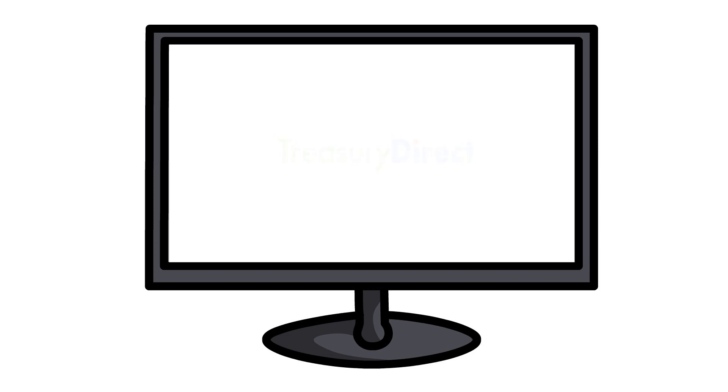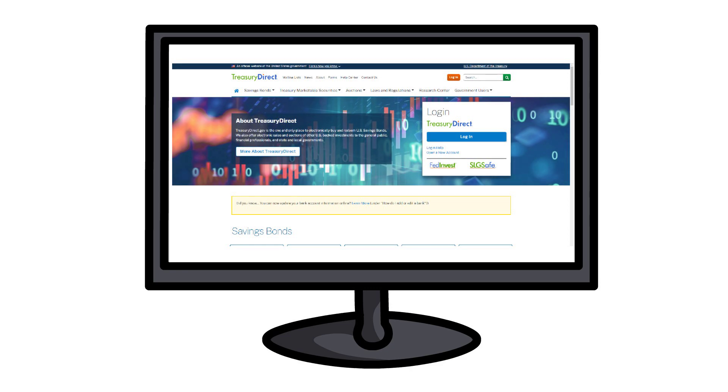At last, I'll show you how to buy I bonds. You can buy I bonds through the Treasury Direct website. I'll leave the link in the video description. After accessing the site, let's open a new account first.